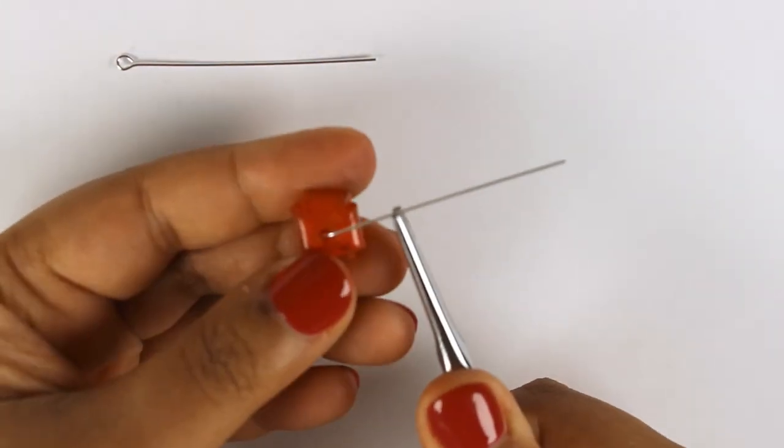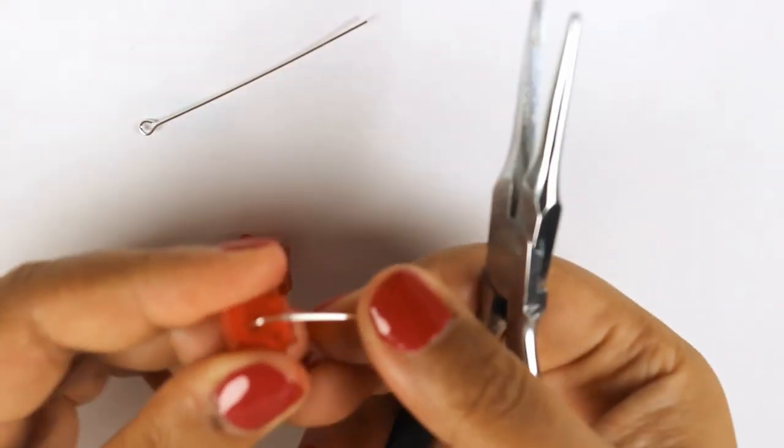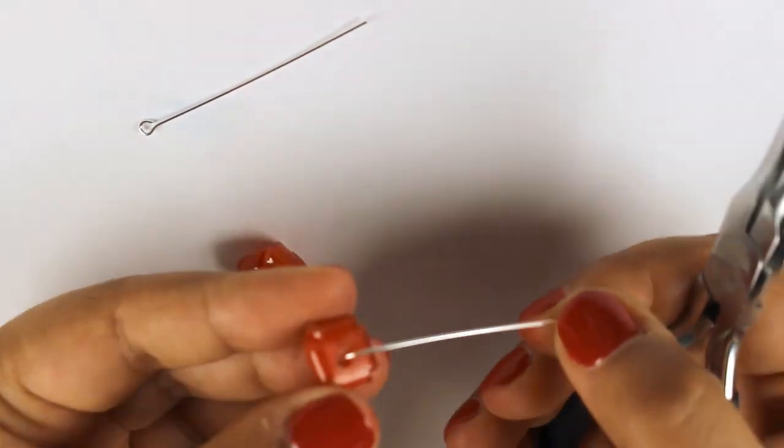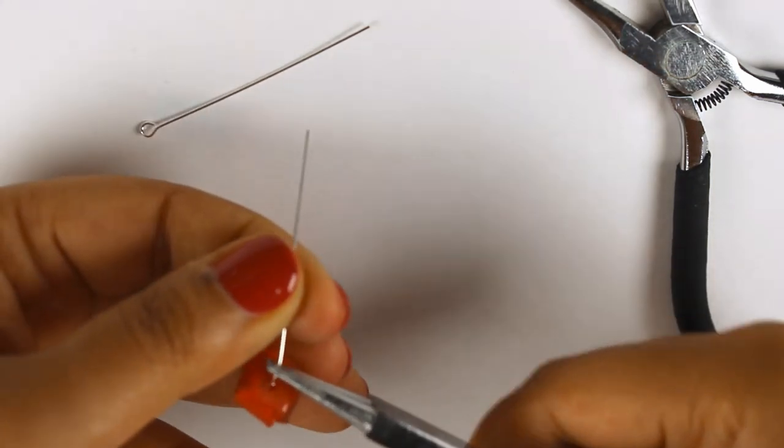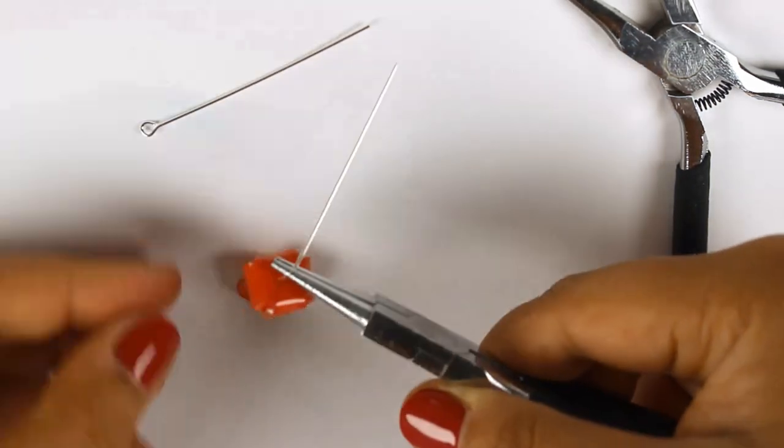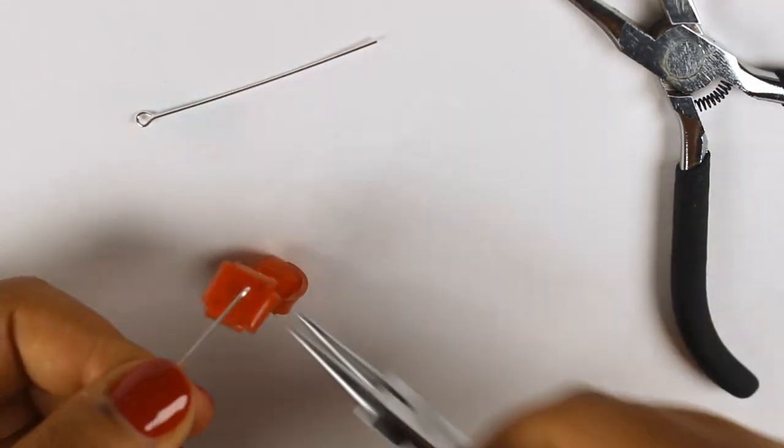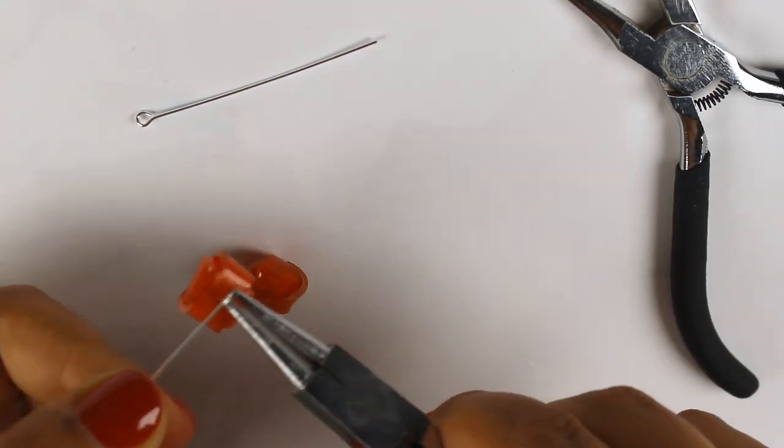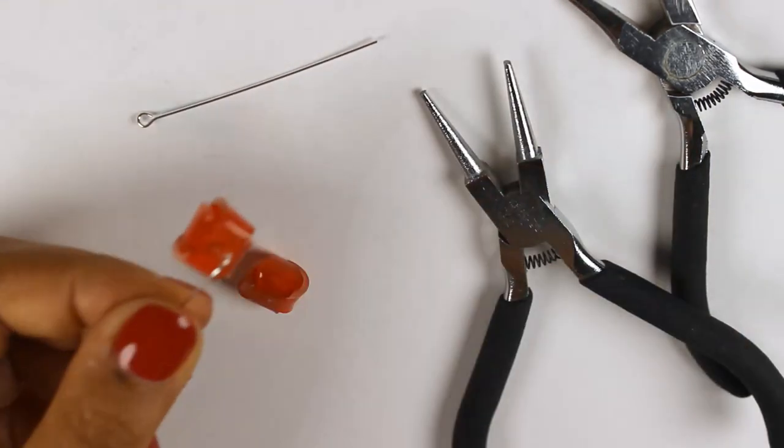I'm using a round nose plier and I am going to twist it around so that it forms a loop, and then I'm going to snip off the excess.